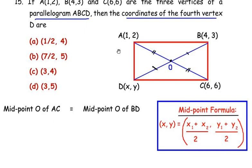Now when we are finding the midpoint of AC, x₁ is going to be 1 and x₂ is going to be 6, and y₁ is going to be 2 and y₂ is going to be 6.